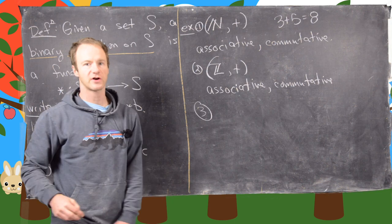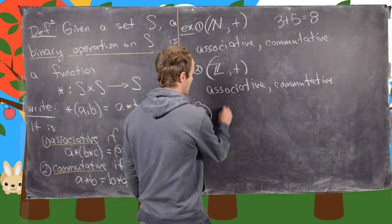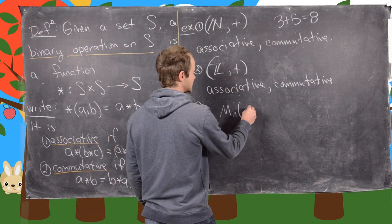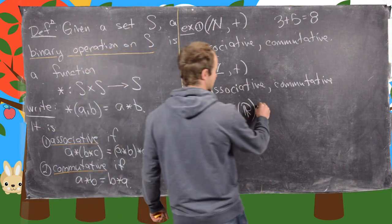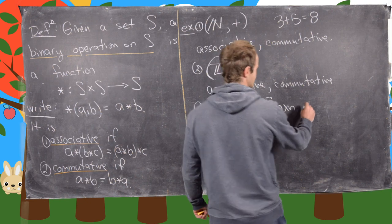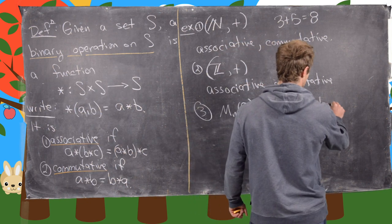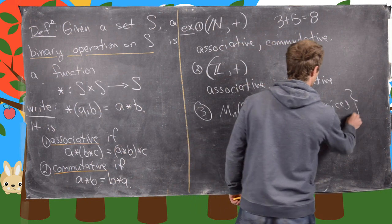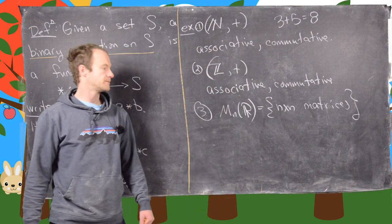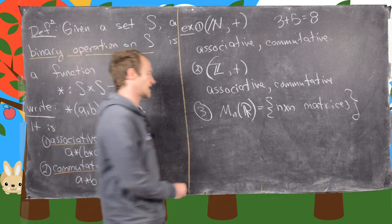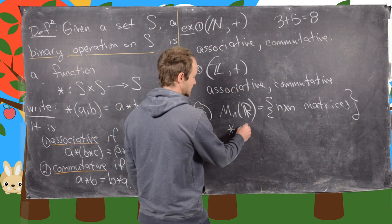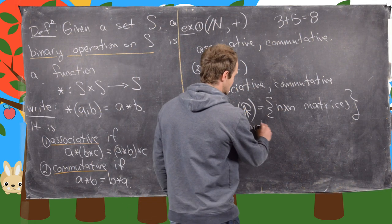So maybe for our third example, let's say we have n by n matrices with entries in the real numbers. So let's write that. So this is all n by n matrices with entries in R. And let's say our operation is matrix multiplication in this case. So I'll just write that by star equals matrix multiplication.